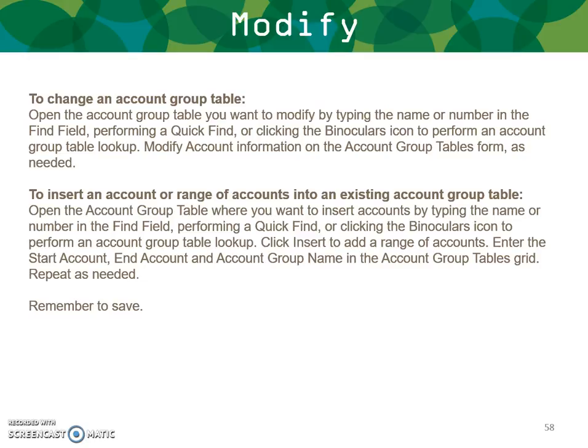To change an account group table, open the table you want to modify by typing the name or number in the find field, or perform a quick find by clicking the binoculars button. Modify account information in the account group tables form as needed. To insert an account or range of accounts, open the relevant account group table, click Insert, enter the start and end account numbers and group name in the grid, then save and repeat as needed. Remember to save.